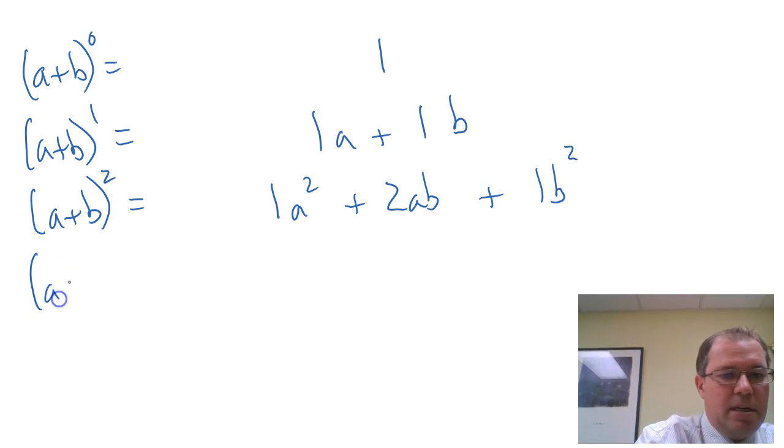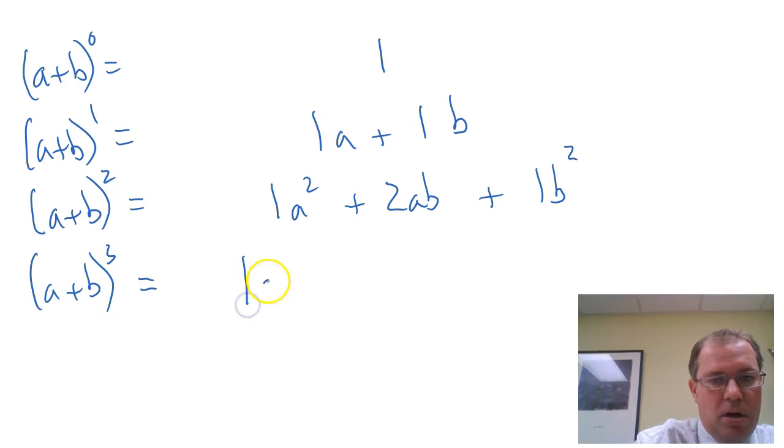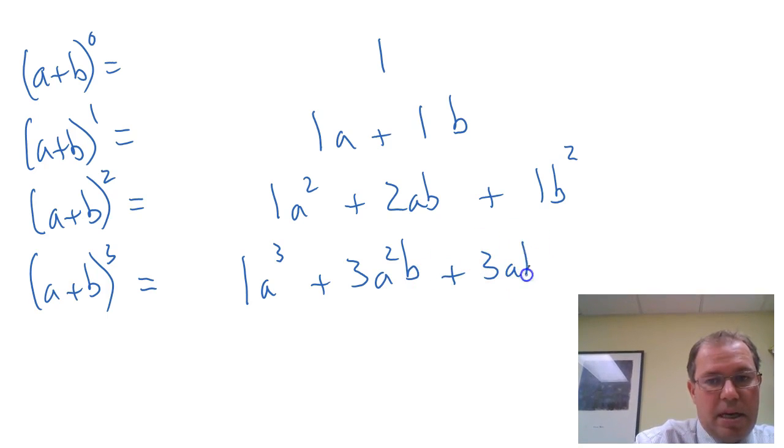And then if we consider a plus b cubed, and obviously you've got a little bit of algebra to do here, you get 1a cubed plus 3a squared b plus 3ab squared plus 1b cubed. And I'll let you do the algebra there.